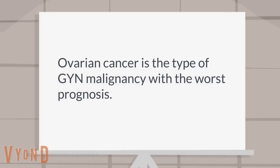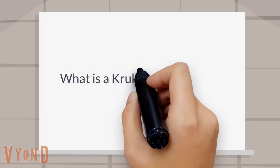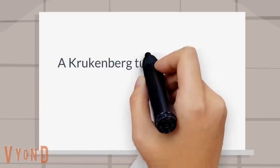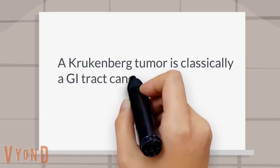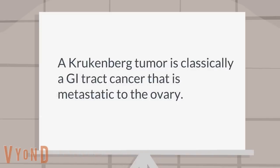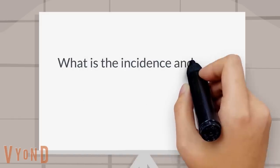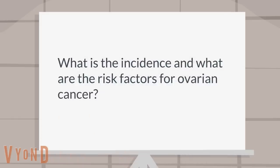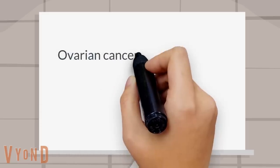Which gynecologic cancer has the worst prognosis? Ovarian cancer is the type of GYN malignancy associated with the worst prognosis. What is a Krukenberg tumor? A Krukenberg tumor is classically a GI tract cancer that is metastatic to the ovary.